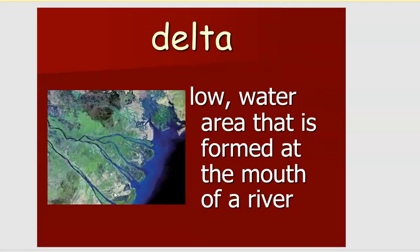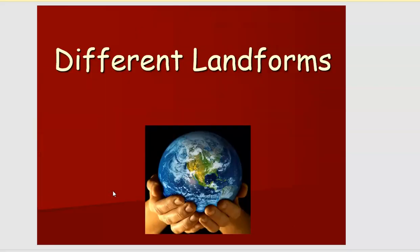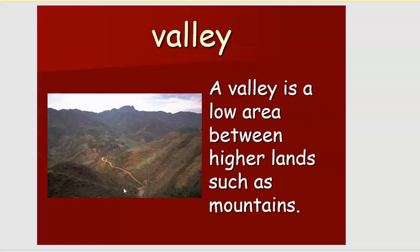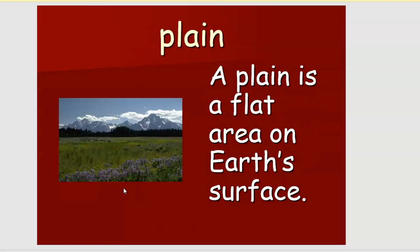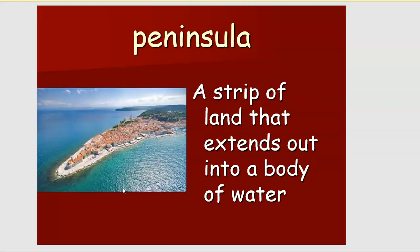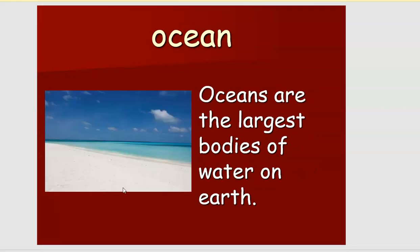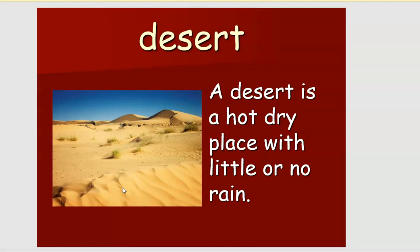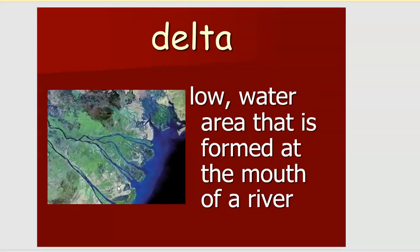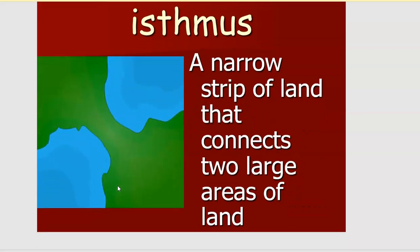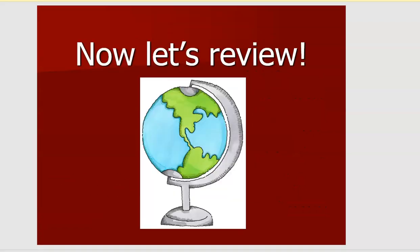Now let us remember all the landforms we have learned. The different landforms are: mountain, valley, plain, plateau, island, peninsula, lake, ocean, coast, desert, river, delta, canyon, and isthmus. So these are the different landforms we have learned today, and now I have a few questions for you.